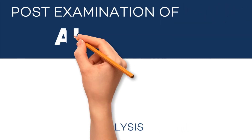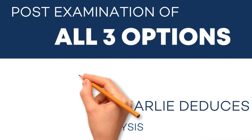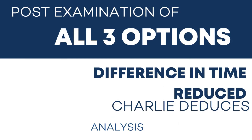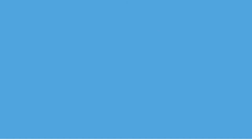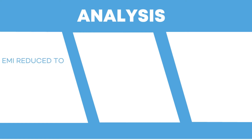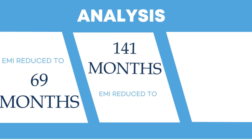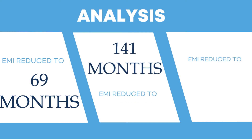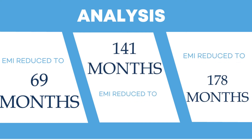After examining all three options, Charlie looks at the reduction in tenure each option offers. In the first option, his loan tenure is reduced by 69 months; 141 months in the second option; and 178 months in the third option.